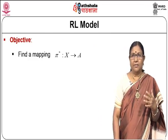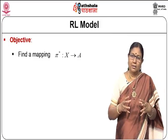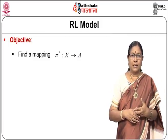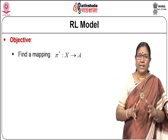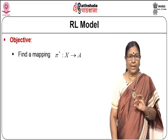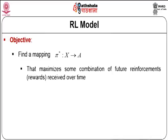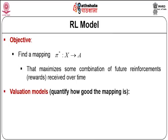Looking at the mathematical model, the objective is to find a mapping pi from states x to actions a, trying to maximize the sum of future rewards received over time. Time is an important parameter in any RL model. We are trying to find a mapping: taking a series of actions and reaching the end while receiving the maximum number of rewards. To quantify how good this mapping is, we define valuation models.